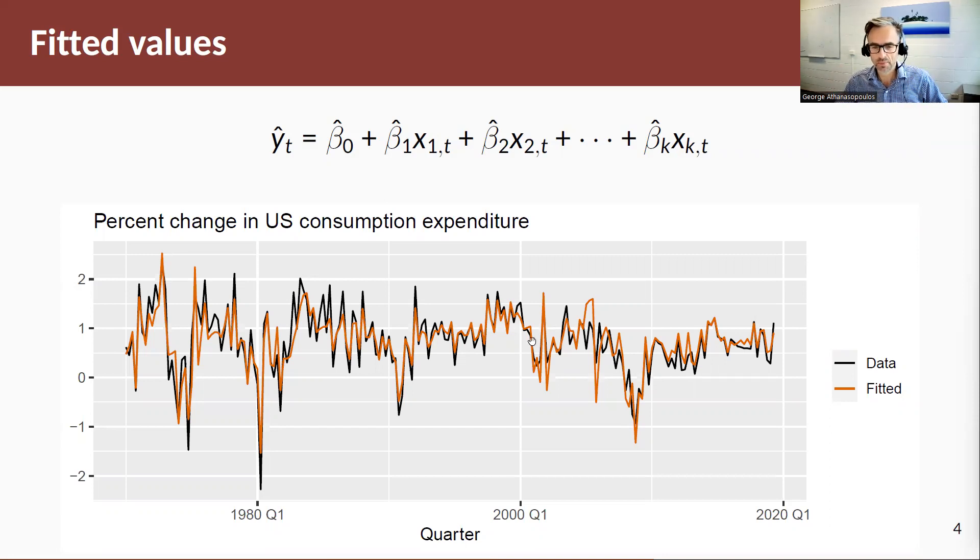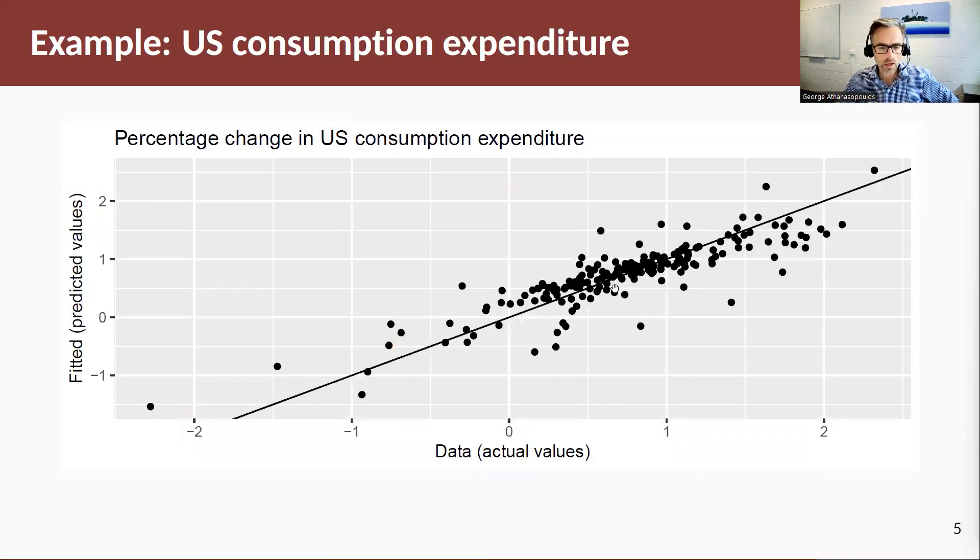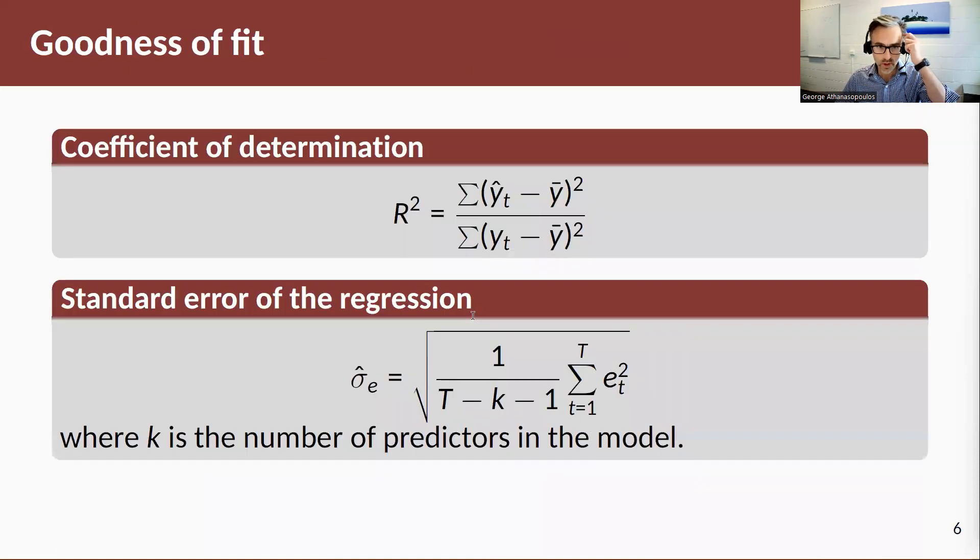An alternative way of looking at this is a scatter plot of our fitted values versus our actual data, and the strong positive relationship here shows that again, a nice fit. Now there are formal ways of thinking about the fit of the model to the data—the goodness of fit.